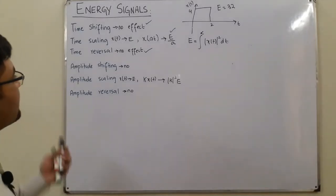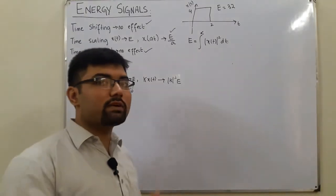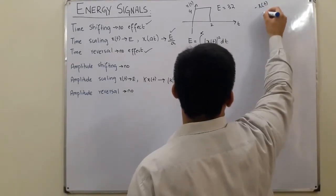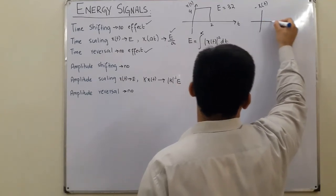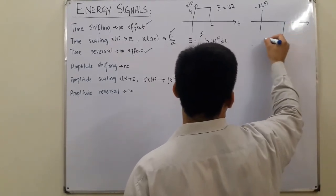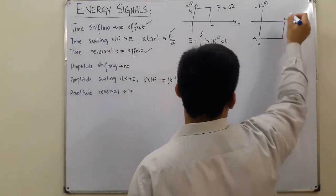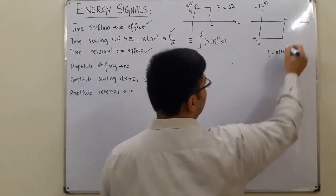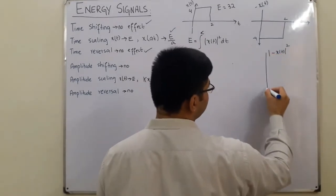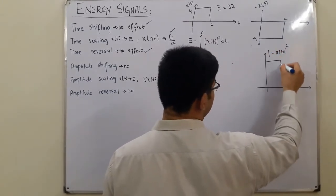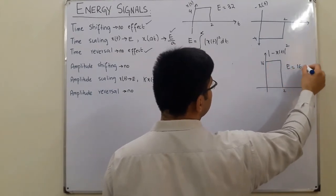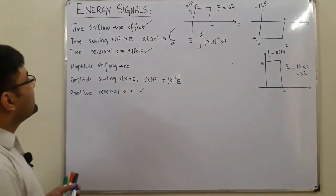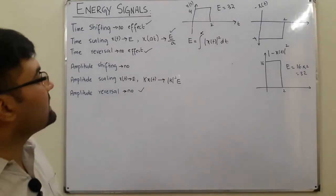Now for amplitude transformations. The simplest is amplitude reversal — you flip the signal about the x-axis, giving −x(t), with amplitude −4. To calculate the energy, you take |−x(t)|², which gives positive 4 squared = 16. With width 2, the energy is 16 × 2 = 32. Amplitude reversal has no effect.